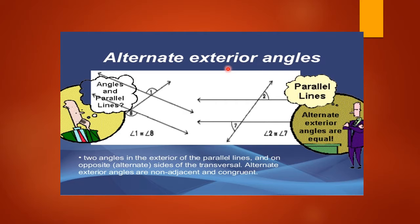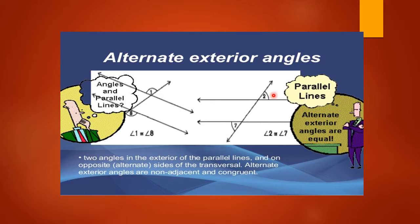Alternate exterior angles: exterior means outside and alternate means opposite. Angle two is at the outside and angle seven is also at the outside — they will be equal in measurement. So two angles in the exterior of the parallel lines and on opposite sides of the transversal: alternate exterior angles are non-adjacent and congruent.